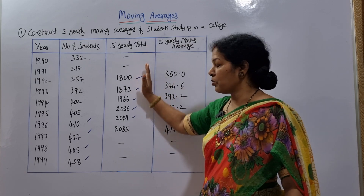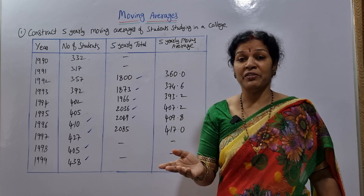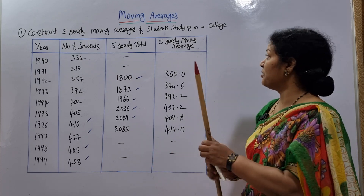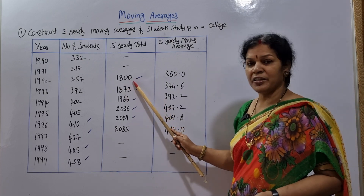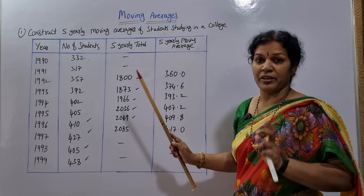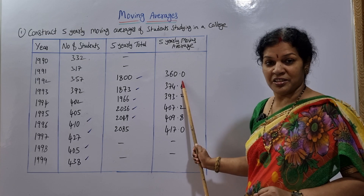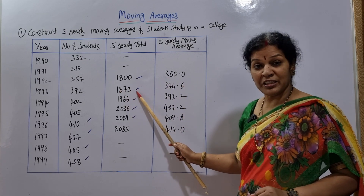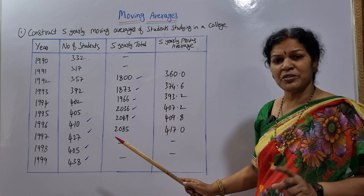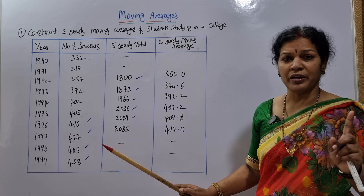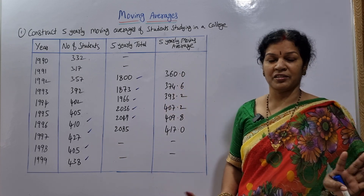Now the totaling is over. For the five-year moving average, we simply divide each total by 5. So 1800 divided by 5 gives 360. In the same way, 1873 divided by 5, and all the other totals are also divided by 5. That gives us the moving average column — and that's it, the moving average is complete.